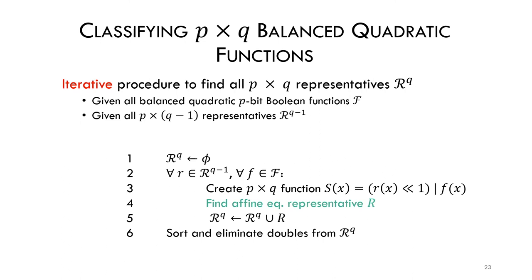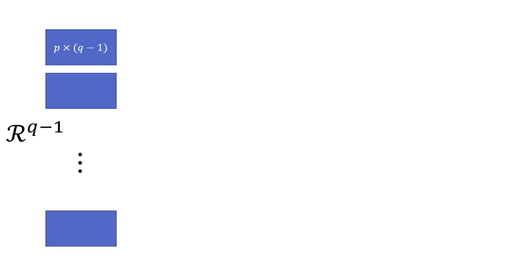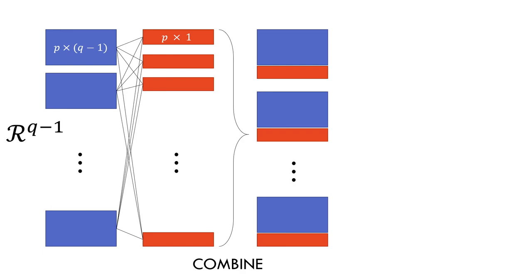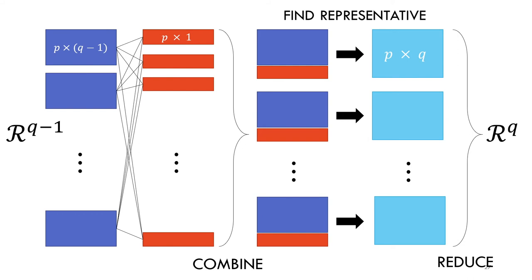I can make this more clear with a graphical illustration. Let's assume that as a result of previous steps in the algorithm, we have a list of the representatives of p-by-q-1 functions. We also have an exhaustive list of p-by-1 Boolean functions. By concatenating each function in the first column with each function in the second column, we create a list of p-by-q functions.